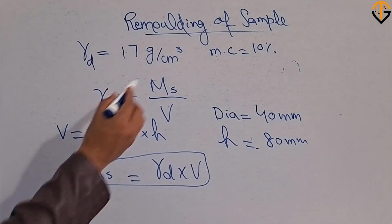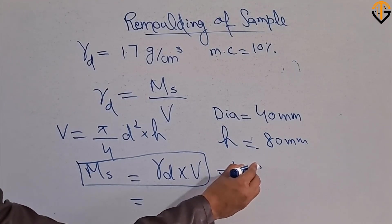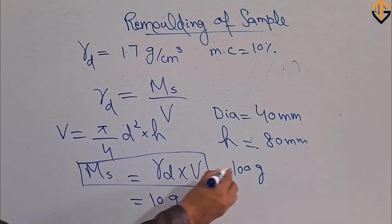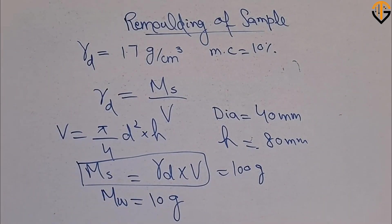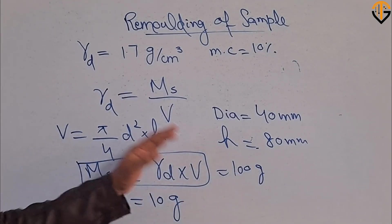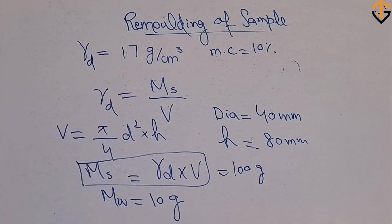Then you need to obtain the mass of water. Let's assume you obtain 100 grams of dry soil mass and there is 10% moisture content. So 10% of 100 grams gives 10 grams of water. You will mix these two quantities and remold the soil sample by compacting it in layers inside the mold. This is how you remold the soil sample.